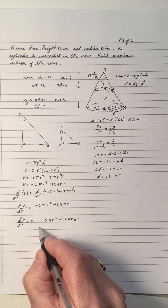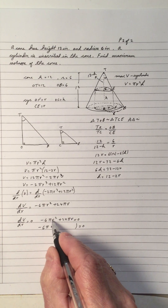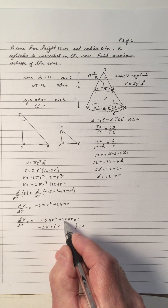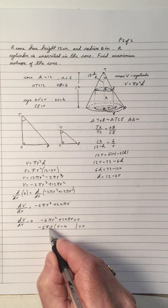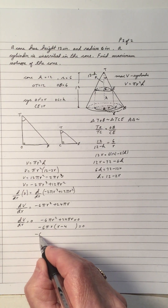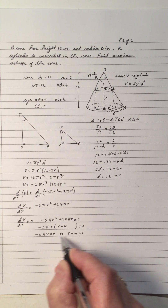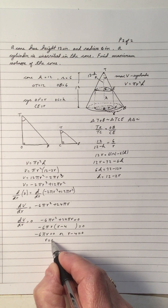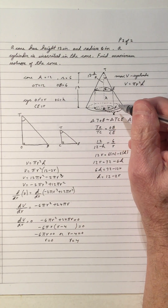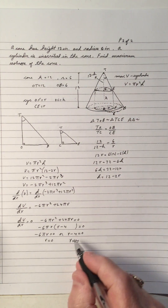We have a quadratic, so factor out negative 6 pi R: negative 6 pi R times (R minus 4) equals 0. So R equals 0 or R equals 4. R equals 0 gives no cylinder at all, so R equals 4 is our solution.